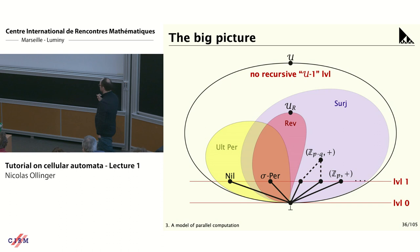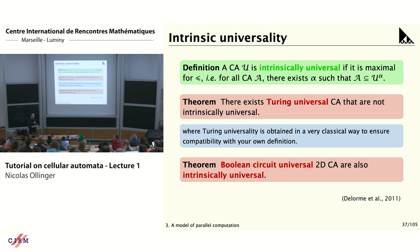Inside the quasi-order, you have a lot of nice things appearing: being ultimately periodic defines an ideal of the quasi-order, being reversible also, being bijective. You have some classes identifying particular behaviors like being nilpotent — nilpotent cellular automata are those for which every spacetime diagram after some time is just uniformly monochromatic. And then I have a definition of universal: you are intrinsically universal if you can simulate every other cellular automaton.